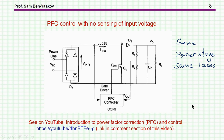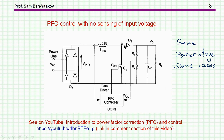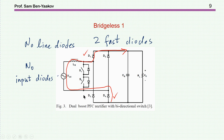The losses associated with the power stage are really independent of the control. Here I'm showing a different type of PFC controller in which there is no sensing of the input voltage — only sensing of the current and the output voltage. Although the controller is different, the losses are about the same because the power stage is the same — there is a bridge and an output diode. So how can we eliminate some of these losses?